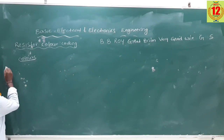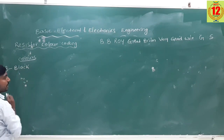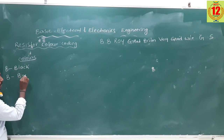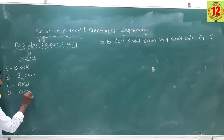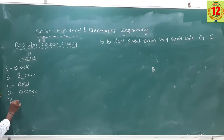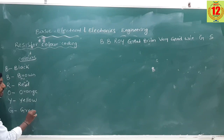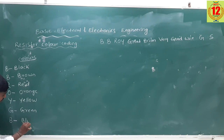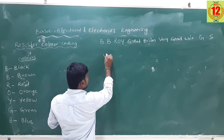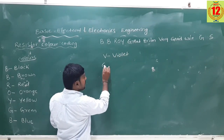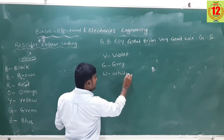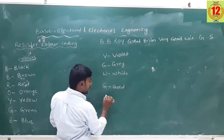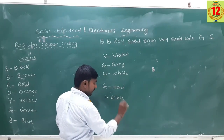The first letter B stands for Black. The next B stands for Brown. Third one, R, stands for Red. Fourth one is Orange. Fifth one, Y, stands for Yellow. Sixth one, G, stands for Green. Next, B stands for Blue. Then V stands for Violet. G stands for Gray. W stands for White. G stands for Gold. S stands for Silver. These are the colors.